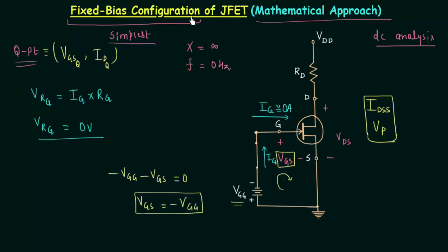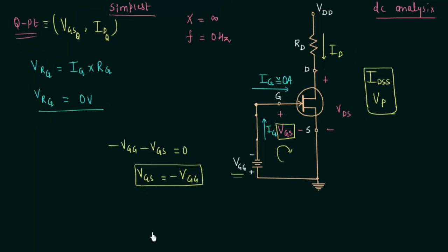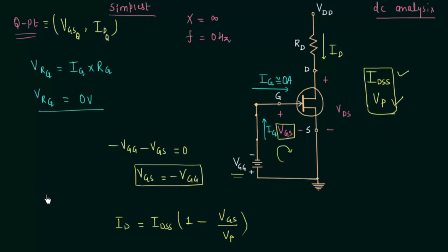Now let us find IDQ, the Y-coordinate of the operating point. The drain current is the current in this branch, and to find it we use Shockley's equation: ID = IDSS × (1 − VGS/VP)². We already know VGS = −VGG, and we have VP given. In this way we obtain both coordinates of the operating point: VGS and ID.